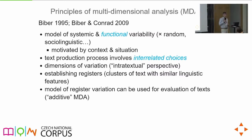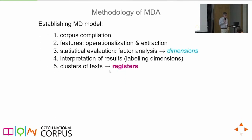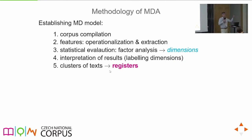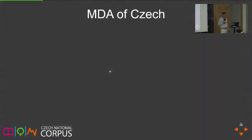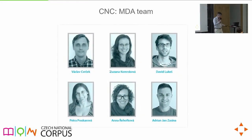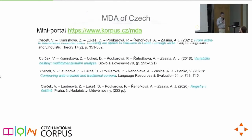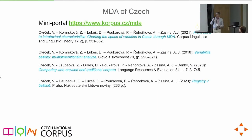To construct a multidimensional model of Czech, you start with a corpus, set a list of features, operationalize and extract them, do statistical evaluation, interpret the results, and end up with registers. This was teamwork with five colleagues. The corpus we compiled is called Coditex, and you can visit corpus.cz/mda for all the important information. We've also published the results in several papers.